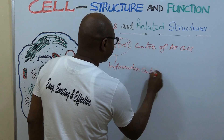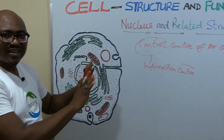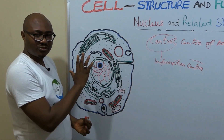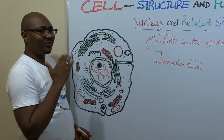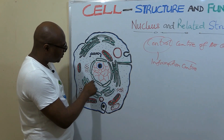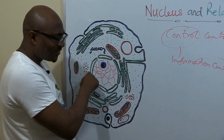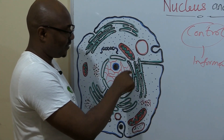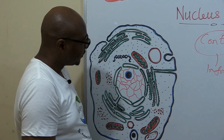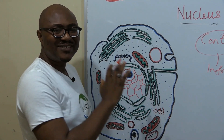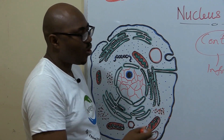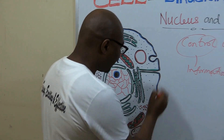You can also call it the information center of the cell. We will look at the functions much later, but now let's do the structure first, then function. The nucleus has a membrane — in fact, a double membrane. This membrane is called the nuclear membrane, or the nuclear envelope.